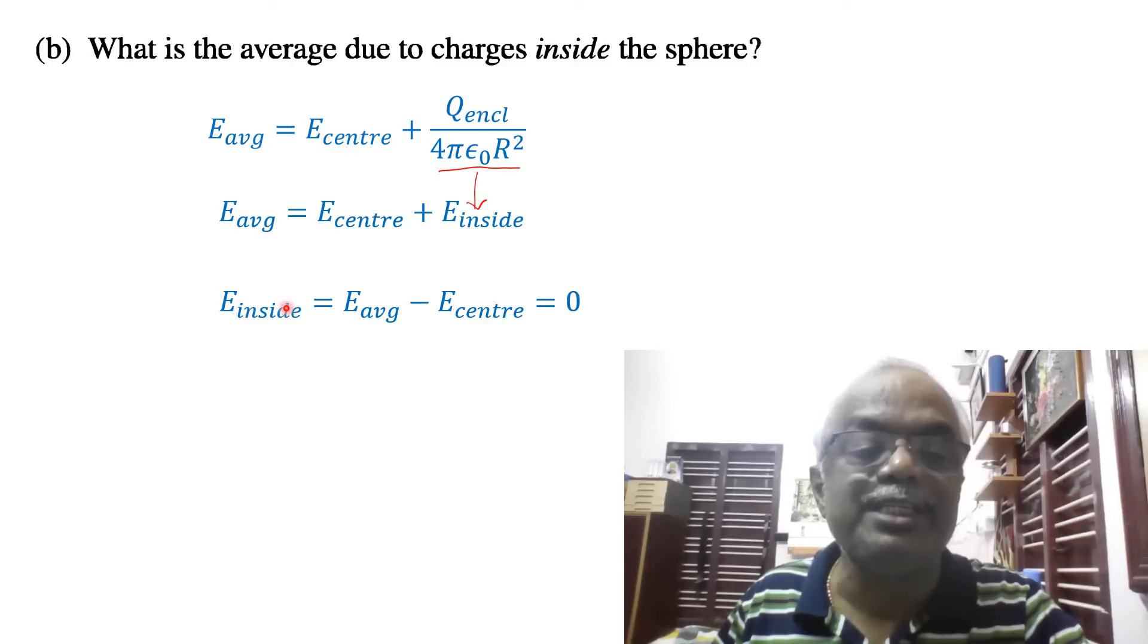What is the electric field inside? Bringing the electric field at the center to the left hand side gives E_inside = E_avg - E_center. In part A, we have seen E_avg equals E_center, so naturally this becomes zero.